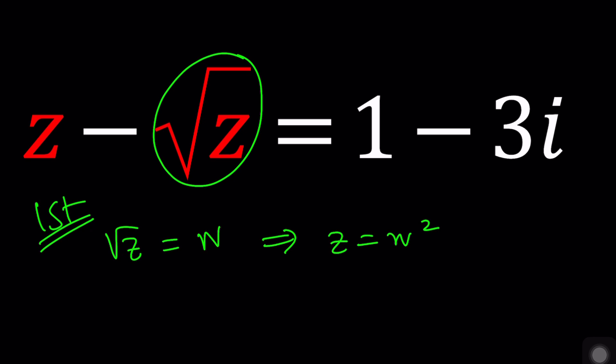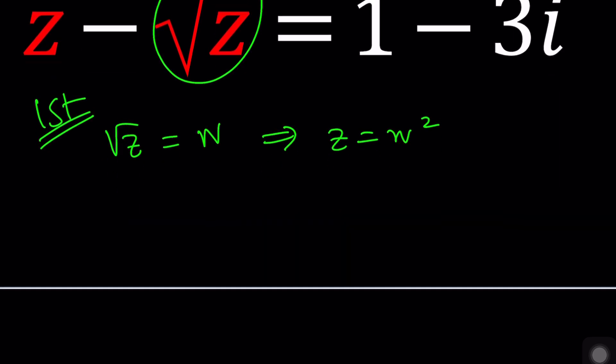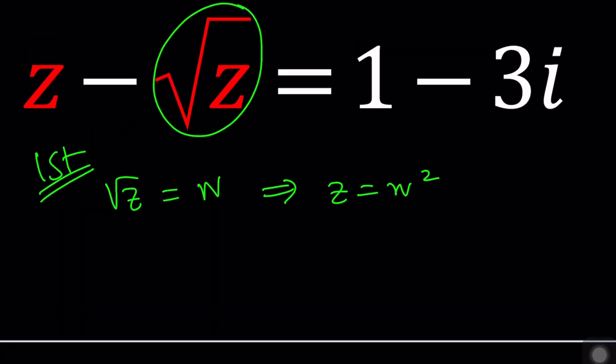I'm going to be using the completing the square method for solving this quadratic. You can also use the quadratic formula if you're not familiar with this but I would highly recommend that you learn this method because it's very helpful. If you plug in, replace z with w squared and square root of z with w, you get the following equation and this is quadratic.